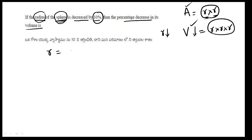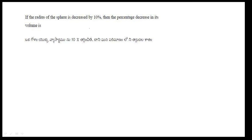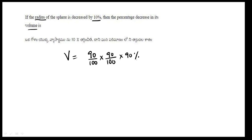So with a 10% decrease, 100% minus 10% is 90%. The radius is 10% less, so the new radius is 90%. Since volume depends on r 3 times, we do 90% three times. So that is (90/100) raised to the power 3.